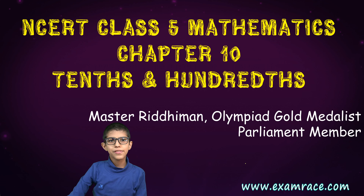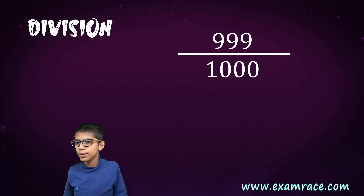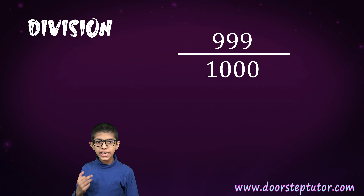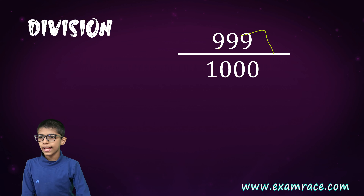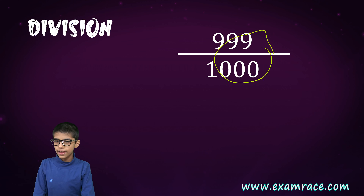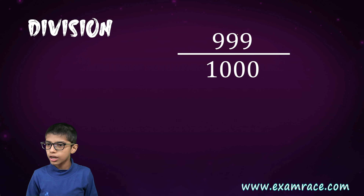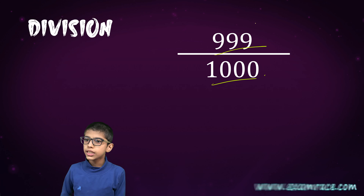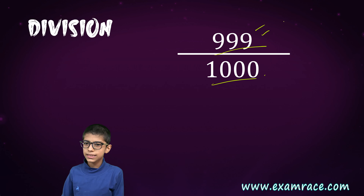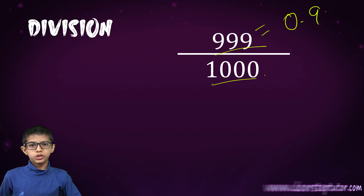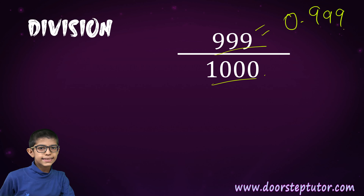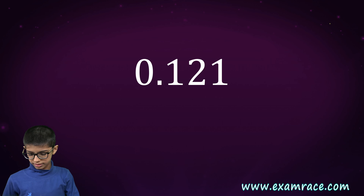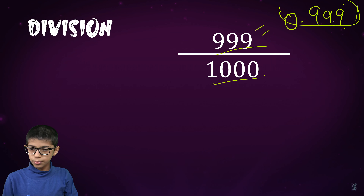Today we will learn about decimal points. Why do we need decimal points? For example, I have the number 999 upon thousand — how would I express this as a decimal? It would be 0.999. But is this so important? Yes it is, and we will learn it ahead.